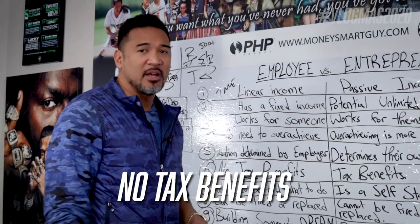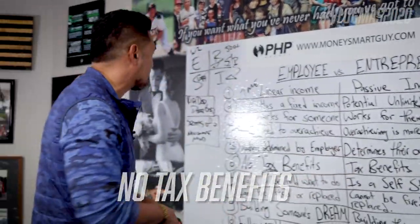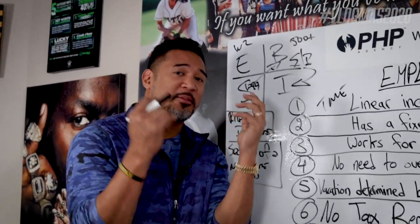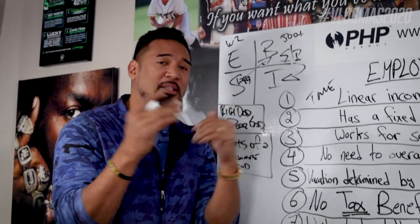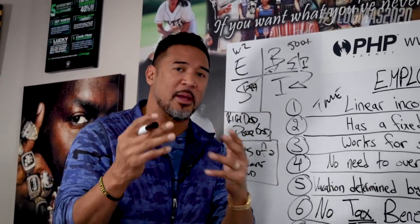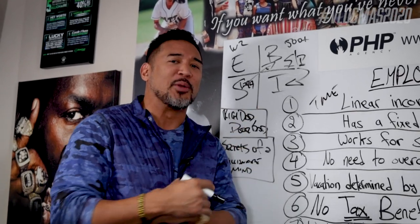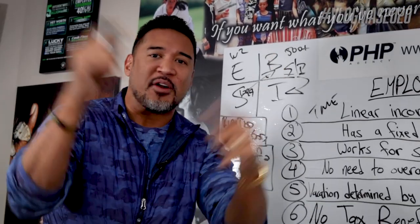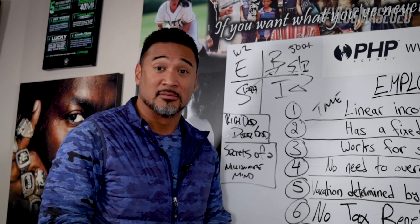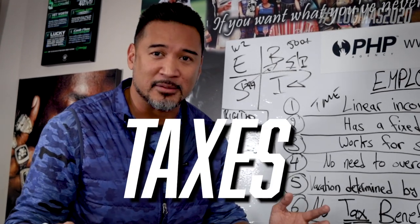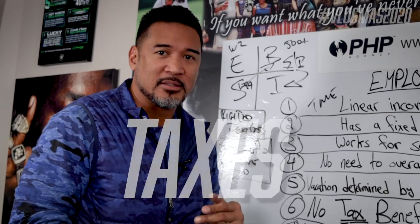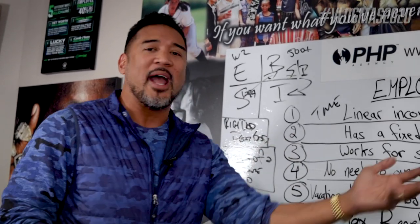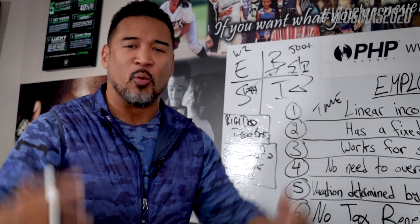Number six: no tax benefits. As an employee, think about this — you get gross pay, whether $35, $50, or $100 an hour. But the first thing taken out of your paycheck is taxes: federal taxes, state income taxes, Social Security, OASDI, FICA. When my son had his first job at 15 pushing carts at Dominic's, he said, 'Dad, somebody ripped me off.' He noticed gross pay at the top and net pay at the bottom — two different numbers.